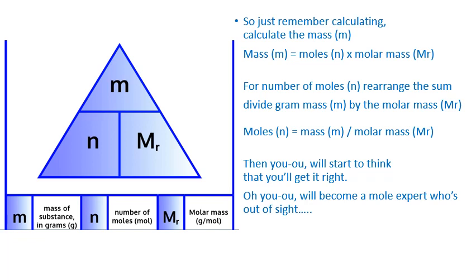So just remember calculating, calculate the mass. Mass equals moles times molar mass. For the number of moles, rearrange the sum. Divide gram mass by the molar mass. Then you will start to think that you'll get it right.